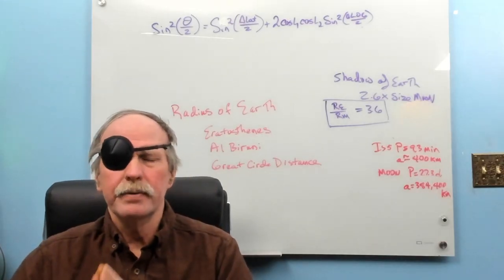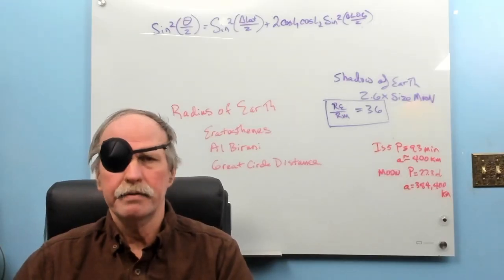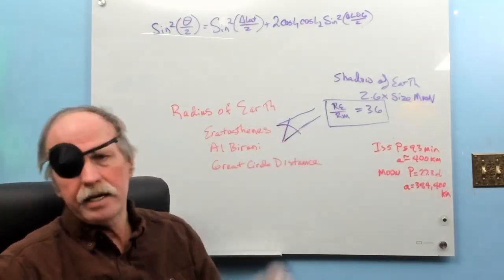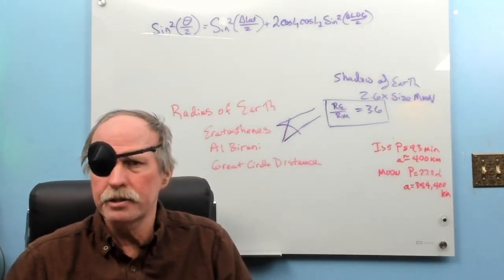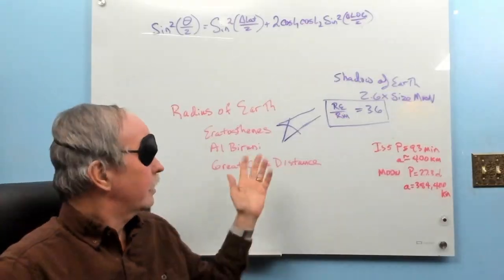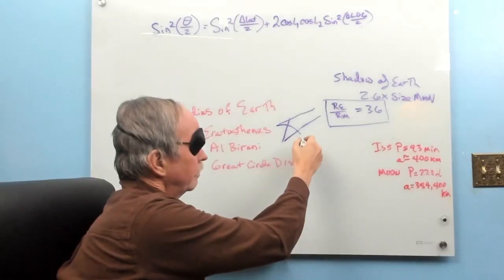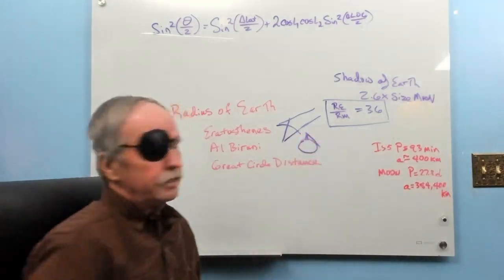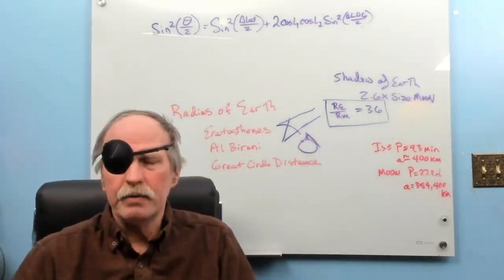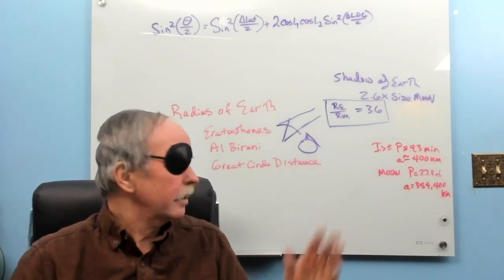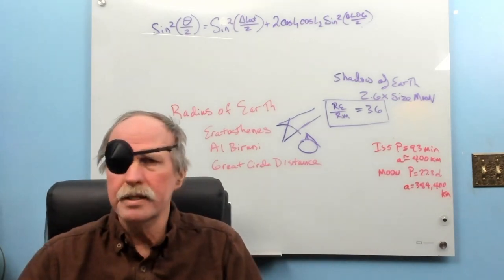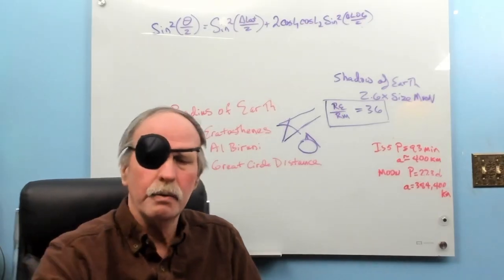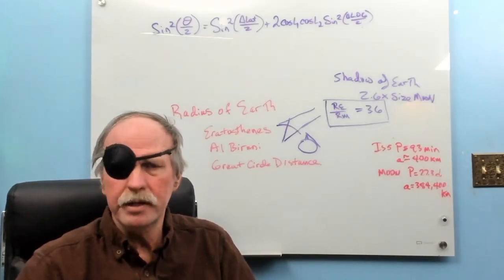Now so far we've measured the radius of the earth by a variety of different means. We looked at the method of Eratosthenes where we looked at the shadow cast in Alexandria when the sun shone directly down a well in Syene. We looked at Alberini where we had the height of a mountain and we measured down to the horizon.